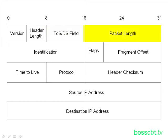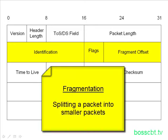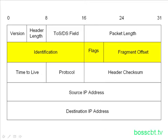Next we have the packet length field, which identifies the length of the entire packet — not only the header but also the data that follows it. After that, the next three fields — identification, flags, and fragment offset — all deal with fragmentation. Fragmentation is when an IP packet has to be broken up into smaller pieces to be successfully transmitted across a network. These fields enable the packet to be reassembled properly after it's been broken up.